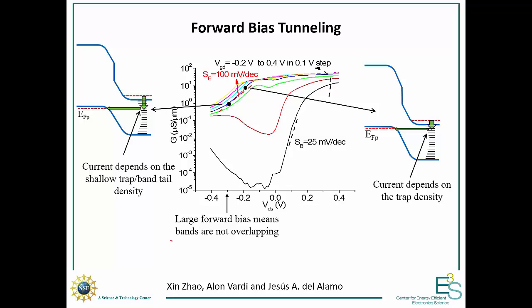In forward biased tunneling we still have a two-step process, but now our electron starts in the conduction band, gives off energy, and then tunnels. Since this is a process where you give off energy, you no longer have a Boltzmann factor — it doesn't matter if you have a large or small barrier; we're going to have the same probability of dropping down. So what limits the current is the tunneling probability or the tunneling density of states. This forward biased regime tells us the intrinsic steepness of the tunneling, whether from barrier thickness modulation or density of states switching, and it's definitely controlled by the tunneling junction rather than a thermal process.